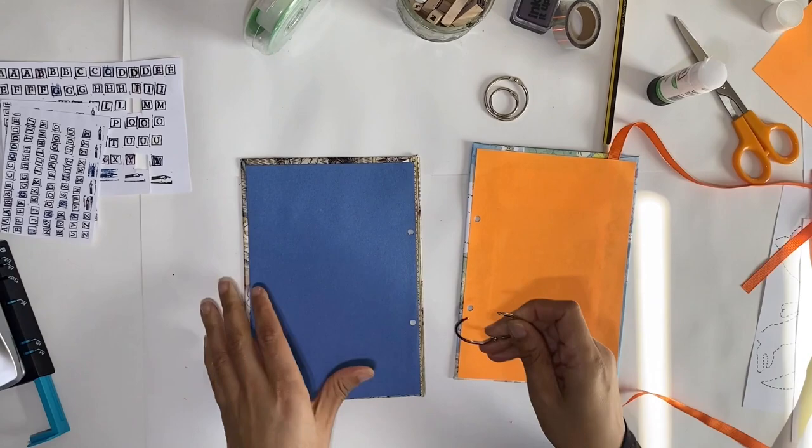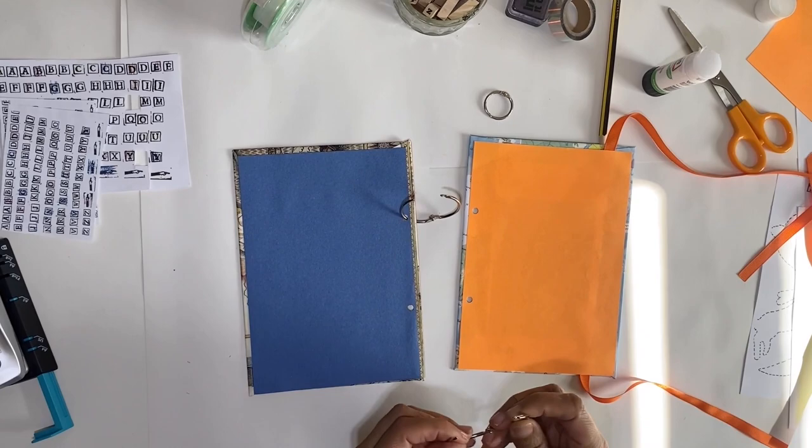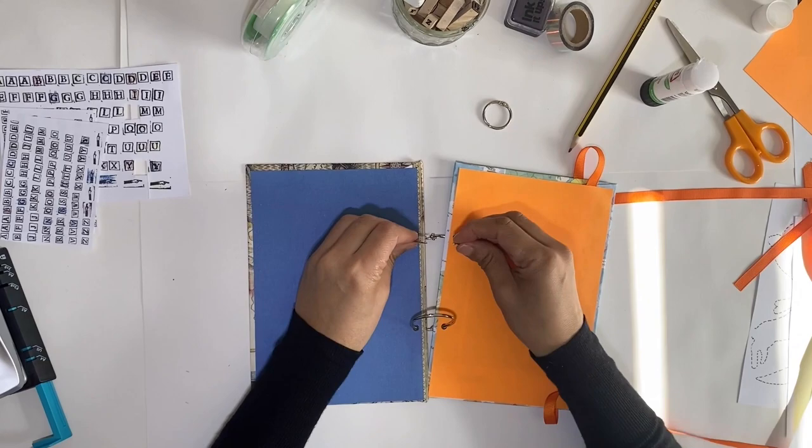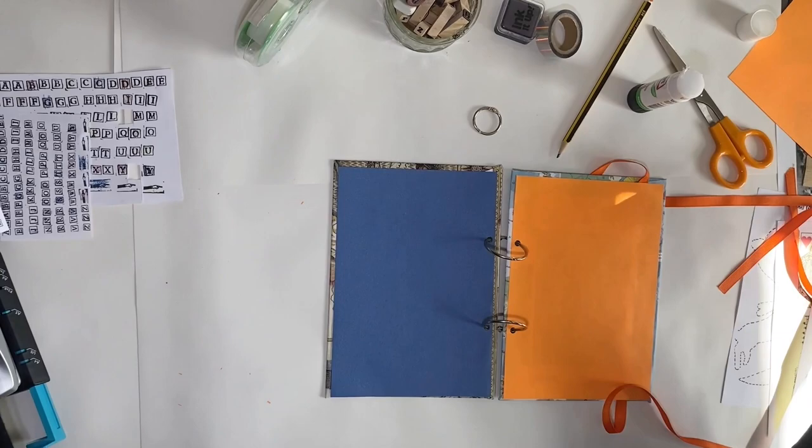Using the book rings, open them up and clip them in place. These are quite fiddly, so you might need a helping hand with these. They're quite hard to open and close. If you don't have book rings, you can always use some treasury tags or string.